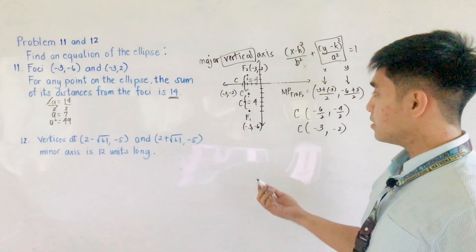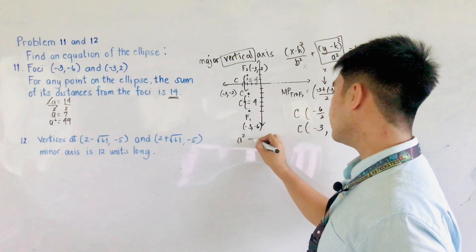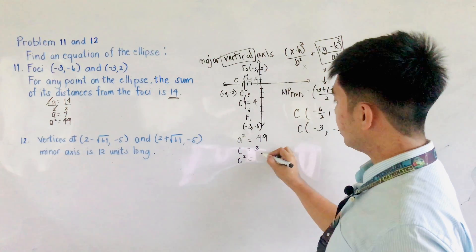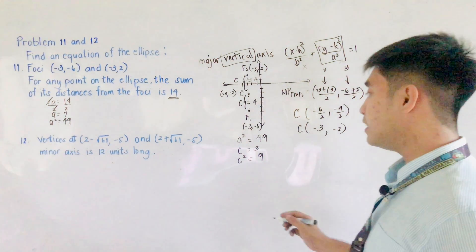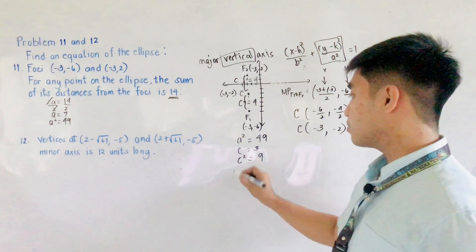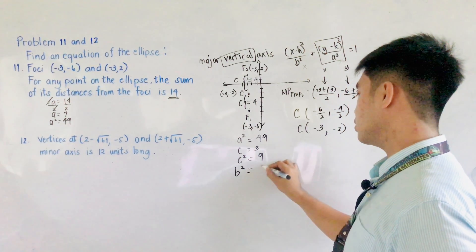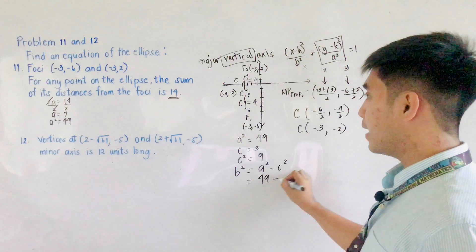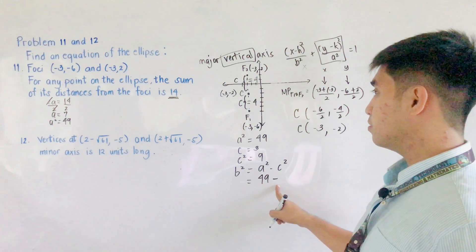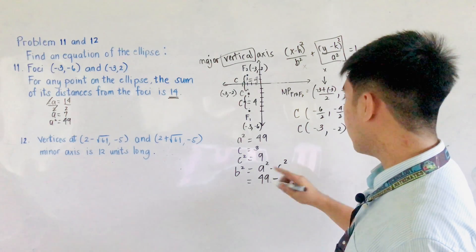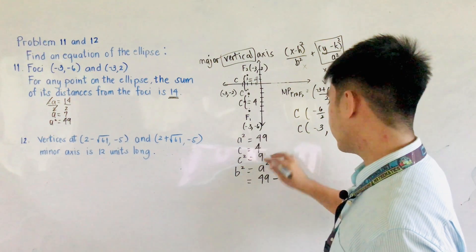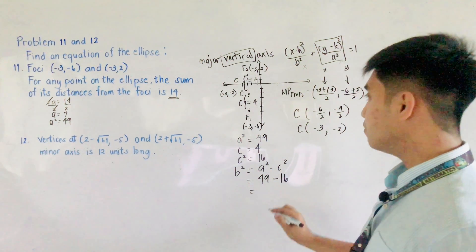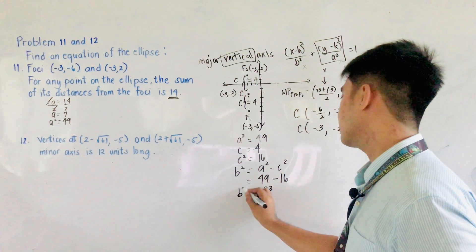We now have A squared equals 49. C is equal to 4, so C squared is equal to 16. We need to find B squared using the formula B squared equals A squared minus C squared. That gives us 49 minus 16, which equals 33. So B squared equals 33.